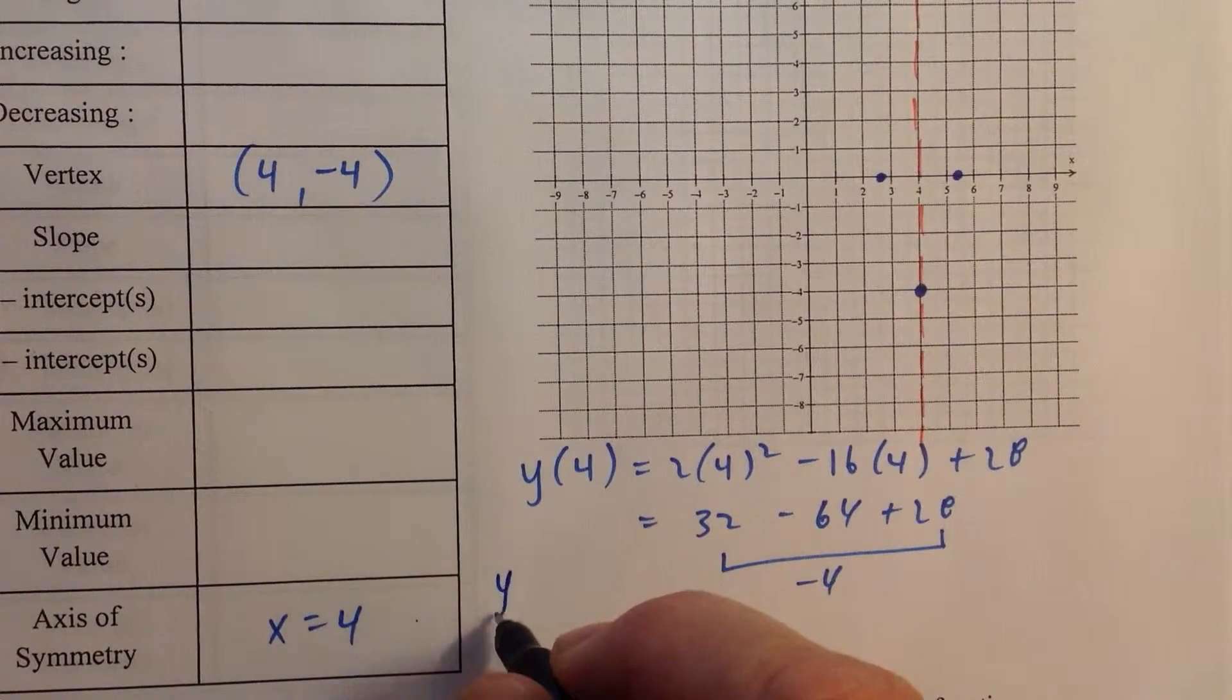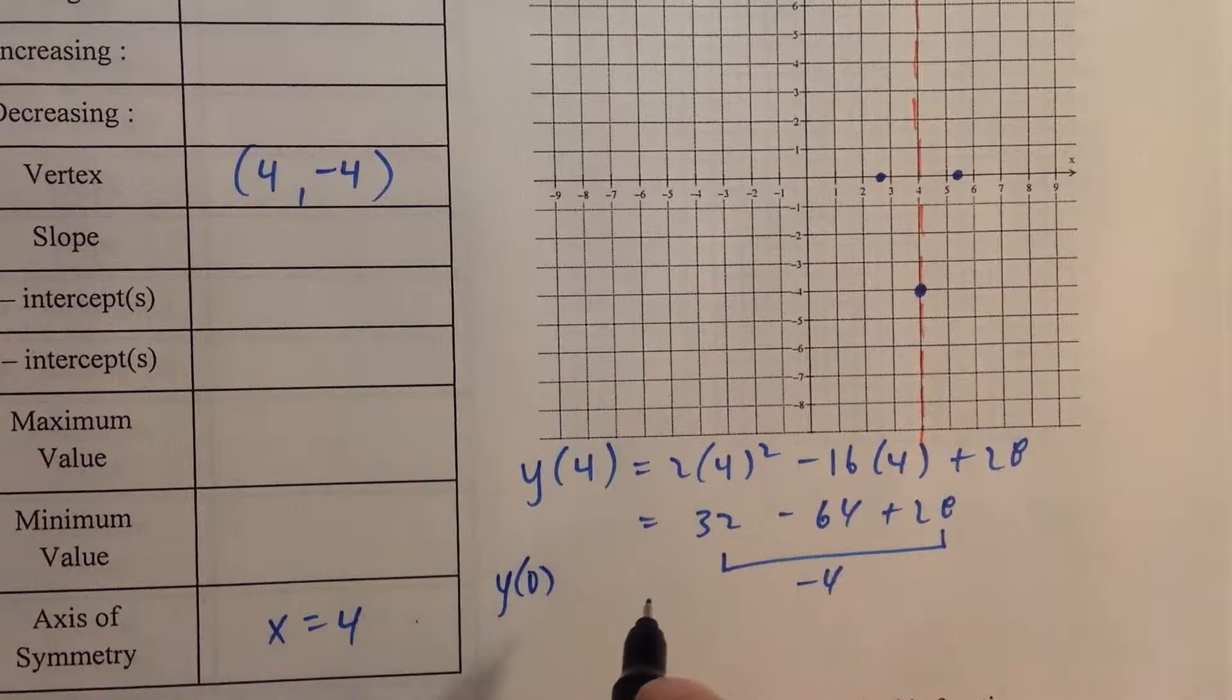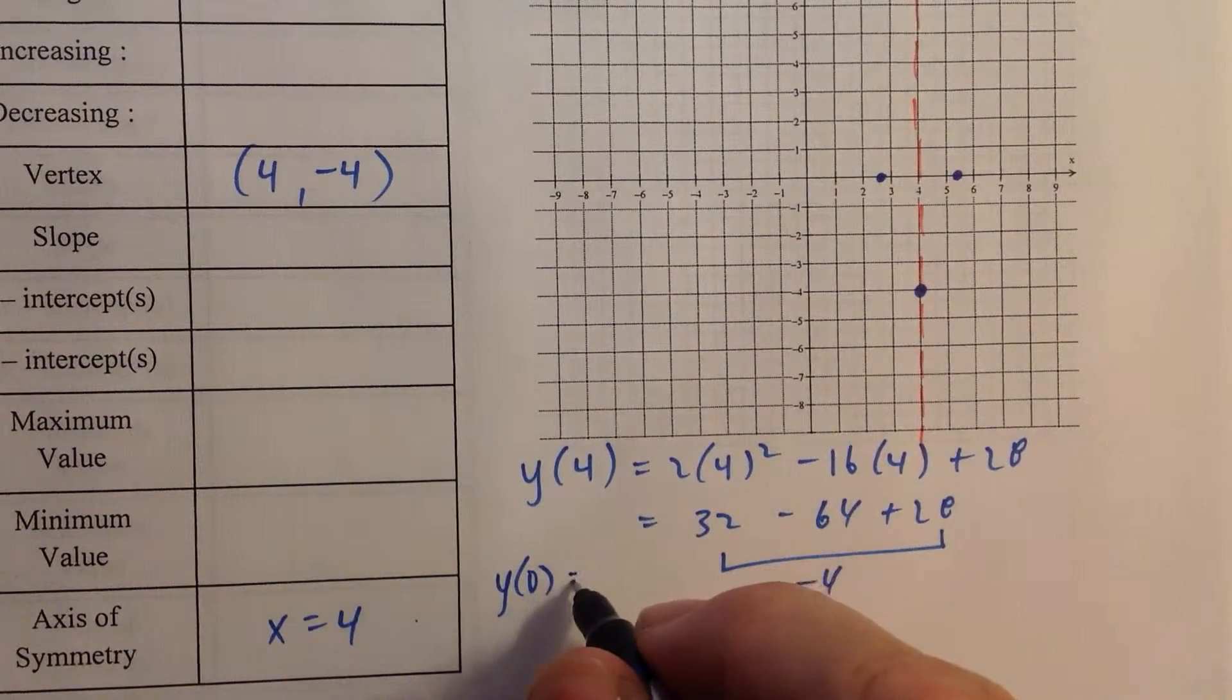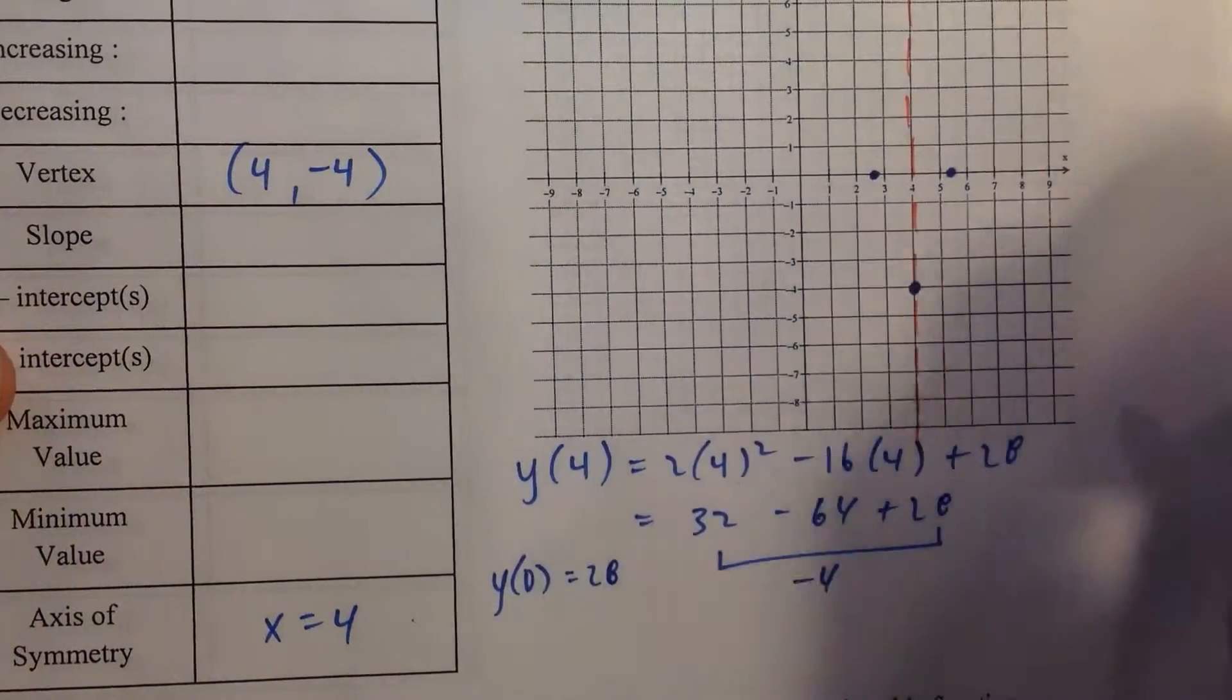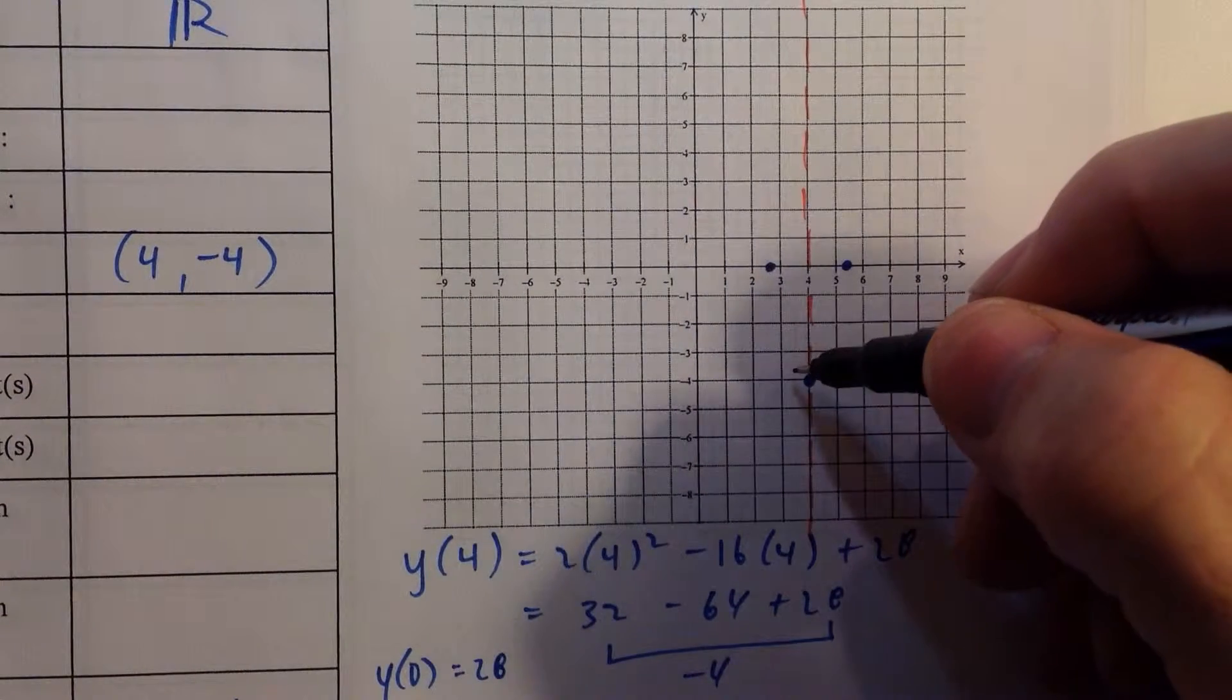And the y-intercept, we can get that by just letting x equals 0. When x equals 0, the y value is 28. So again, we're not going to be able to see it on the graph, but we know where it is.